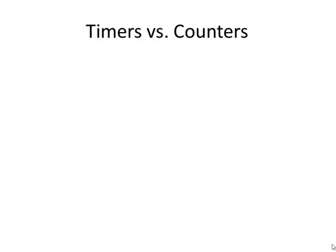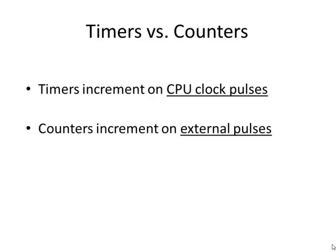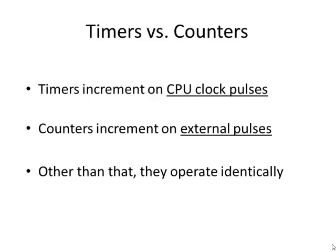Timers versus counters: they operate almost identically. The only significant difference is that timers increment on CPU clock pulses — that's the clock that keeps all data flow inside the CPU synchronized, like a metronome for a musician or the drummer in a band. Counters will increment on external pulses — an external signal coming in. For example, if I wanted to count parts on an assembly line, I might have a sensor that pulses every time a part goes by, and that would feed the clock pulses for the counter. But other than that, a timer and a counter operate exactly the same.